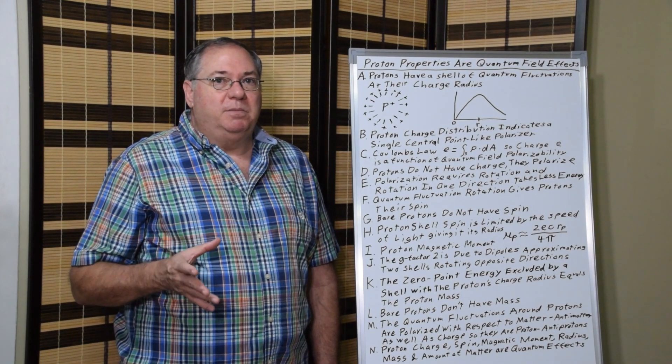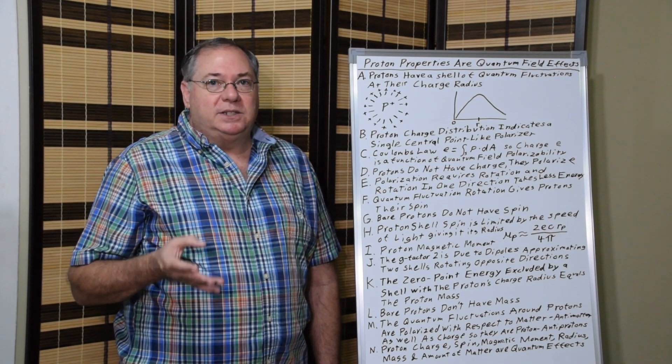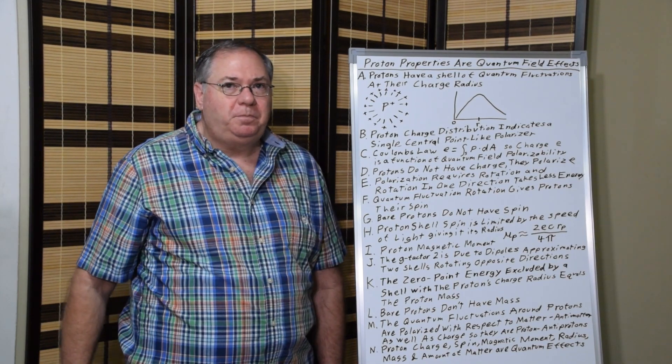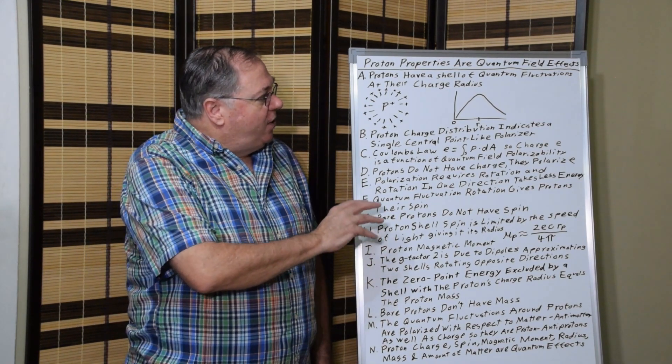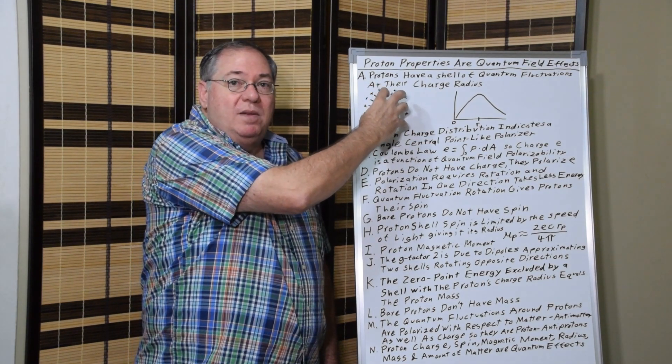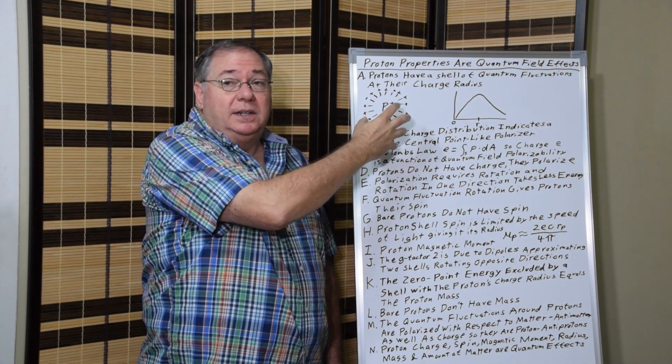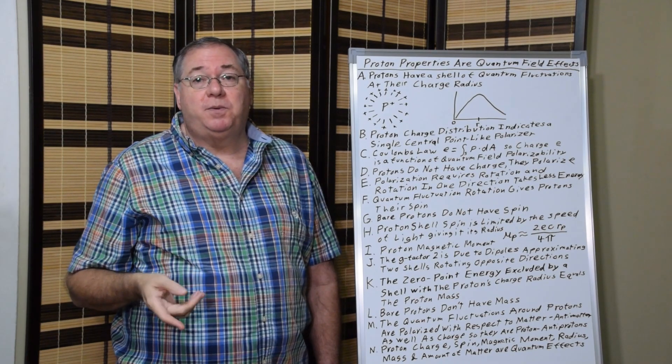Now there are some correction terms to that, so it's not quite two, but it's close. And so this quantum field structure gives us the magnetic moment in addition to the spin.